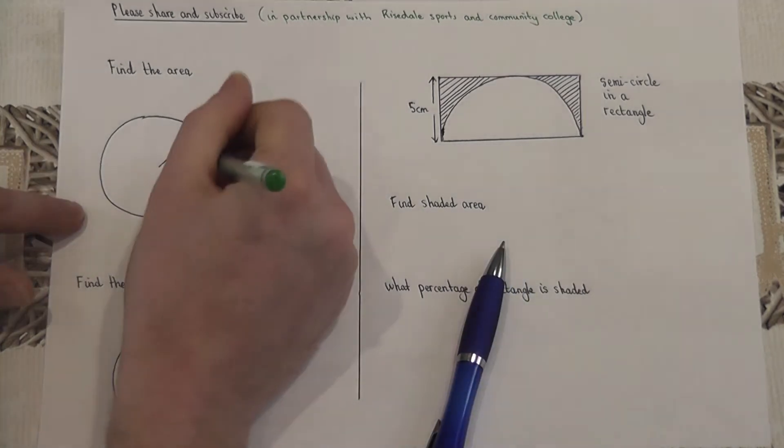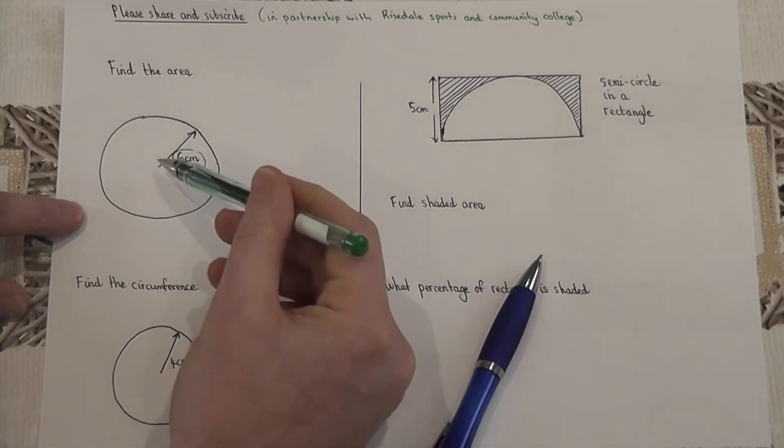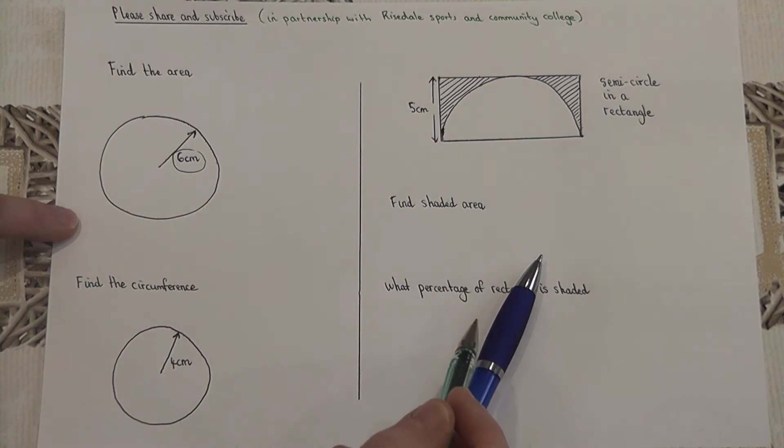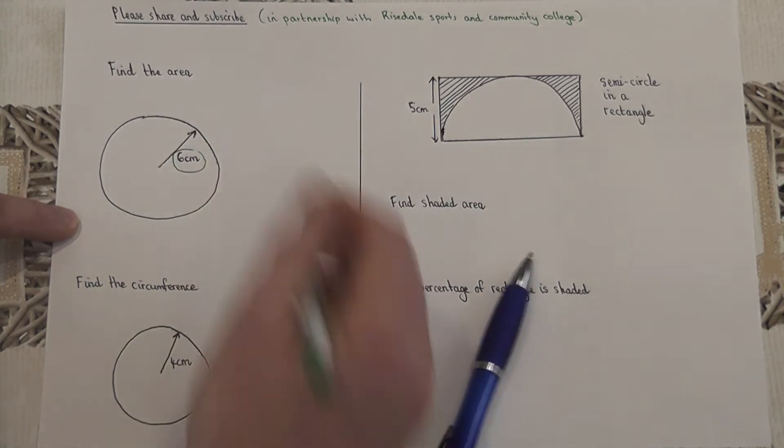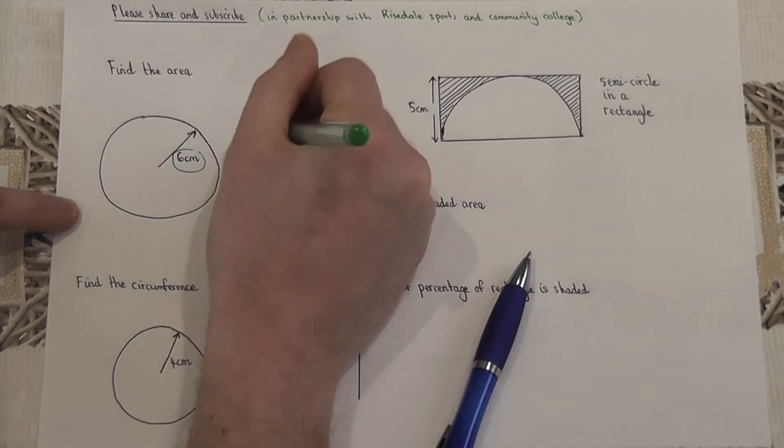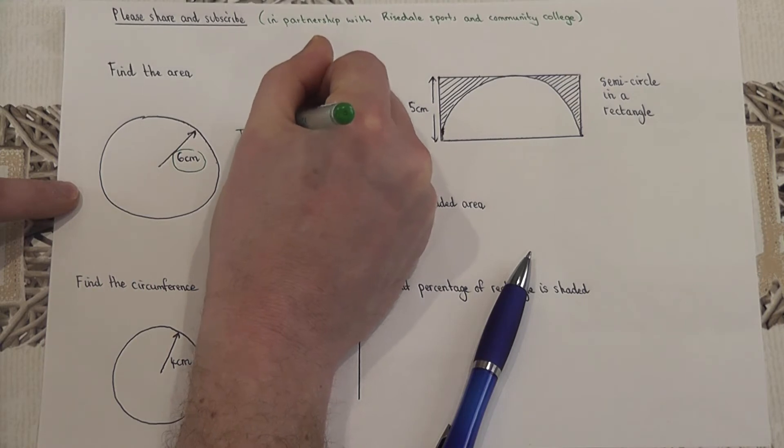Now suppose you're given a circle and you're asked to find the area. We're given here the radius, which is the distance from the center to the outside of the circle. To find the area given the radius, we do a calculation given by pi times the radius squared.